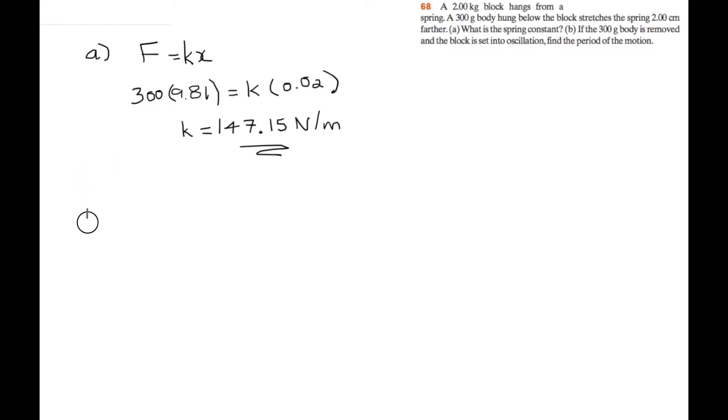Okay, so if the block is set into oscillation without the 300 gram body, so the two kilogram block is set into oscillation, find the period of the motion. So this is pretty simple, we have our formula, the period is equal to 2 pi, square root of M over K,